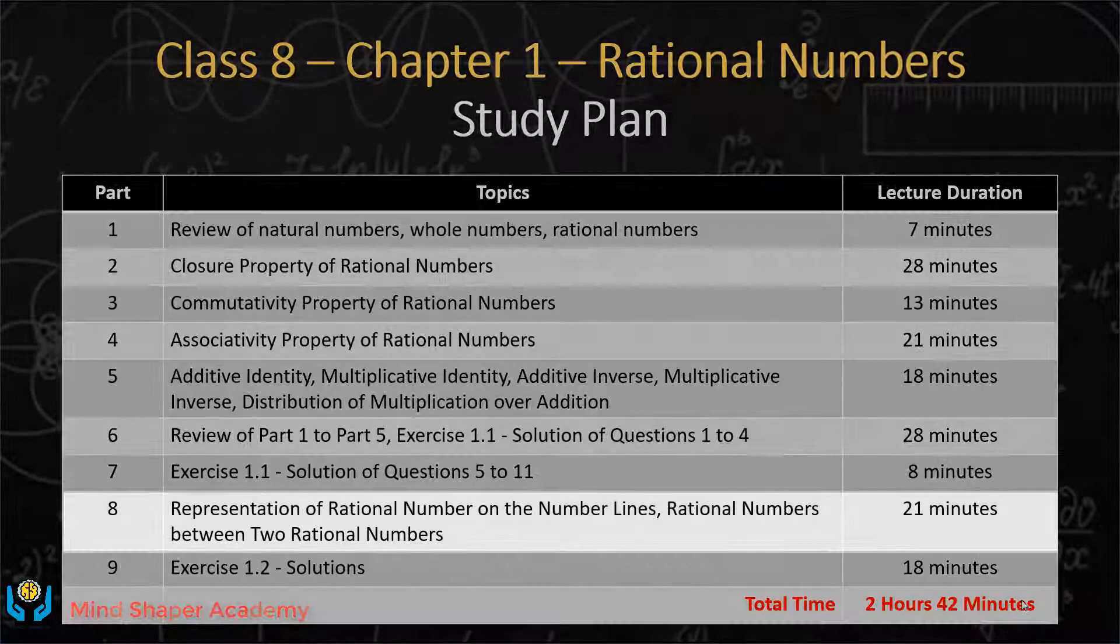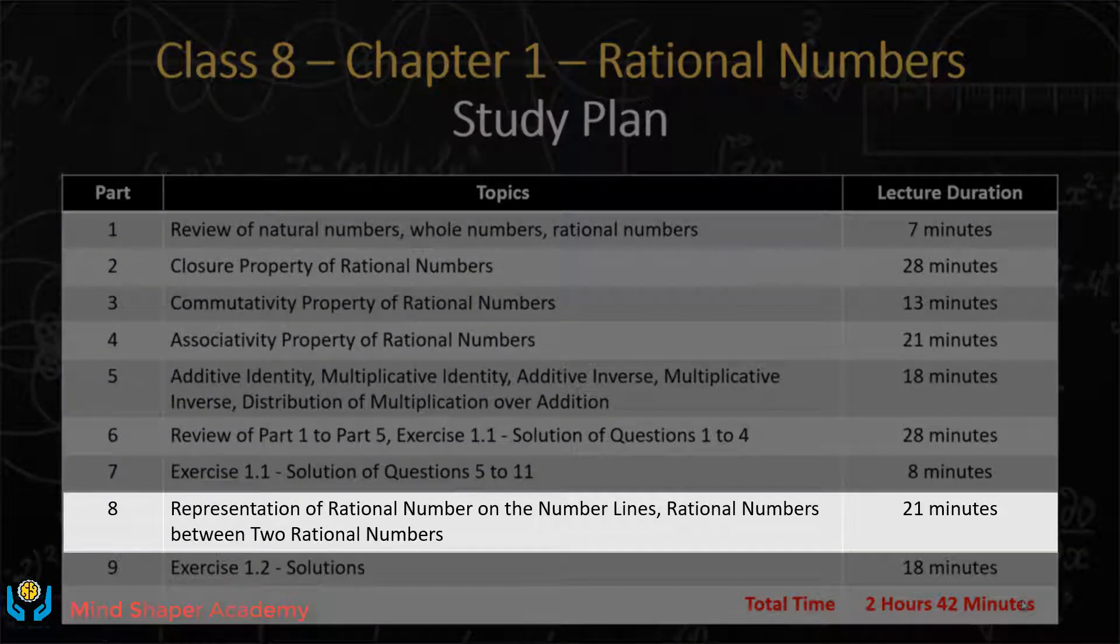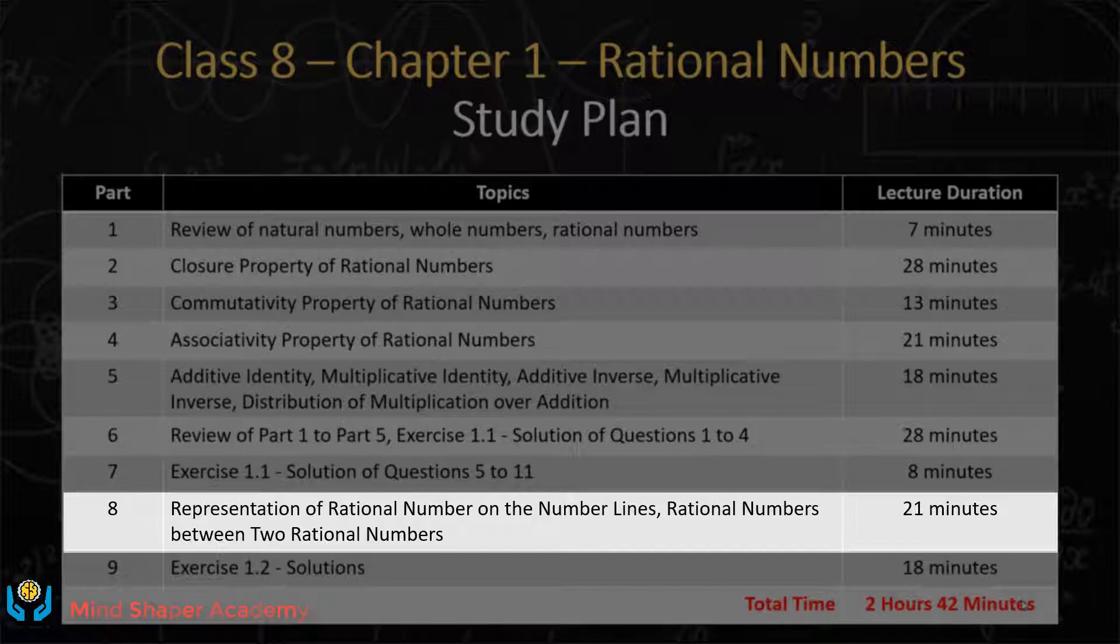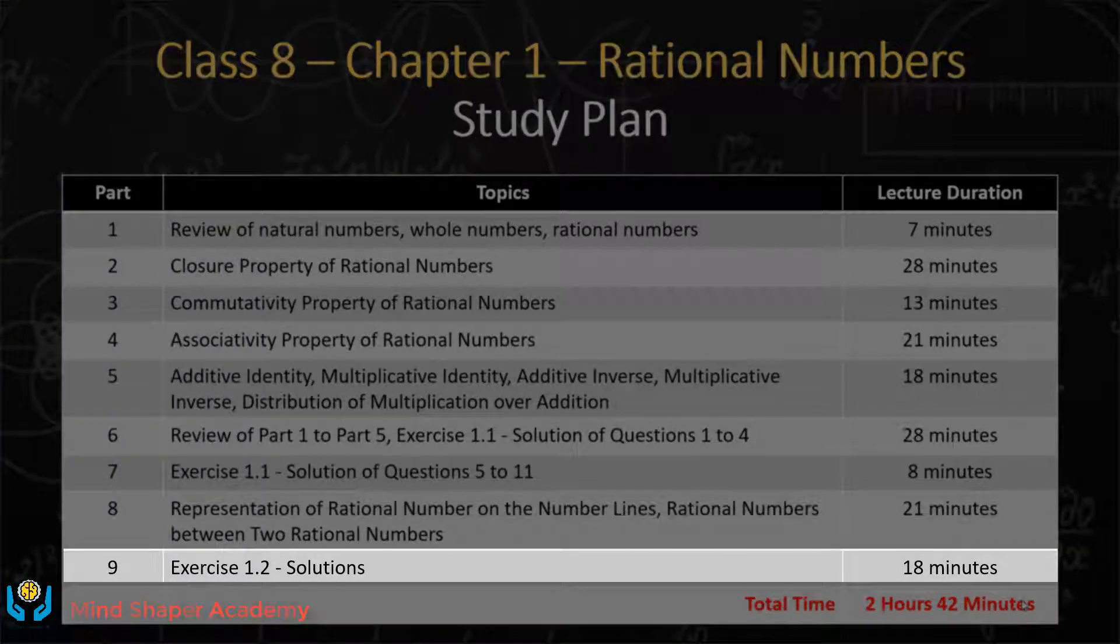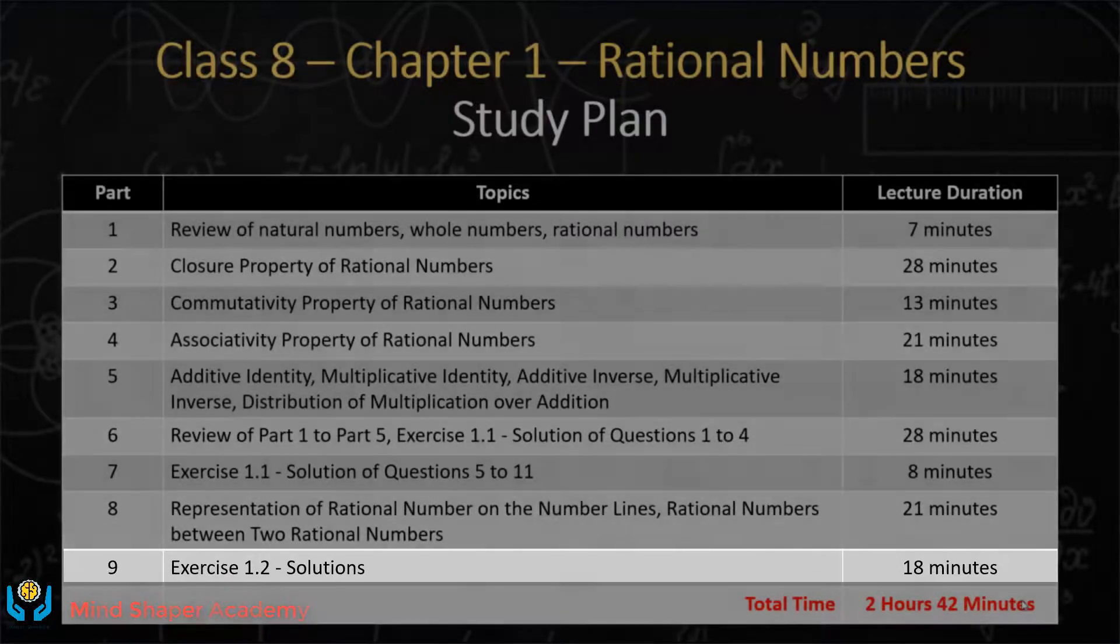Part 8 covers the two remaining topics: the representation of rational numbers on the number line, and rational numbers between two rational numbers. Exercise 1.2 is based on these two topics, and we will solve every question in part 9.